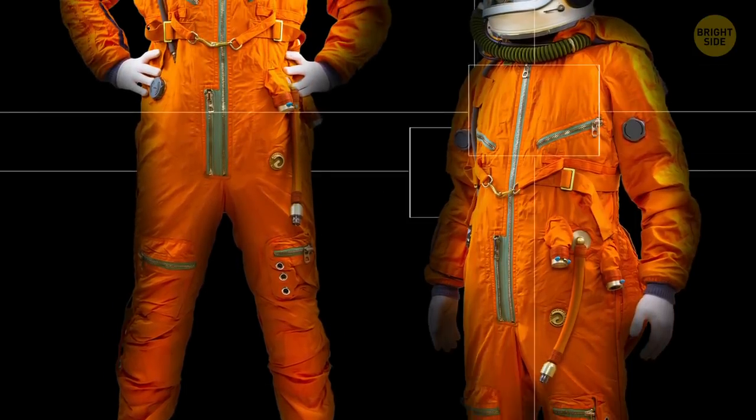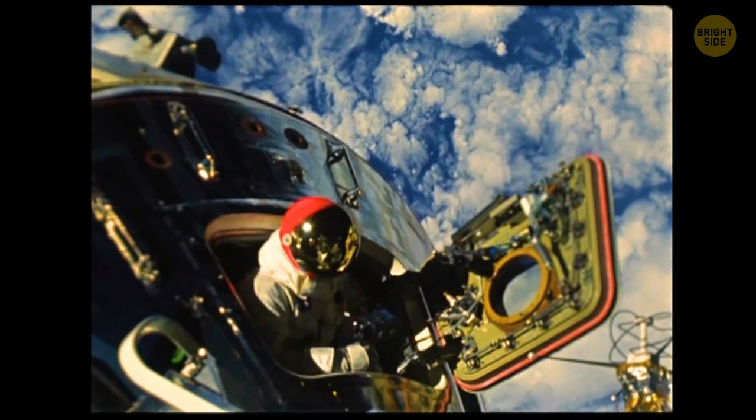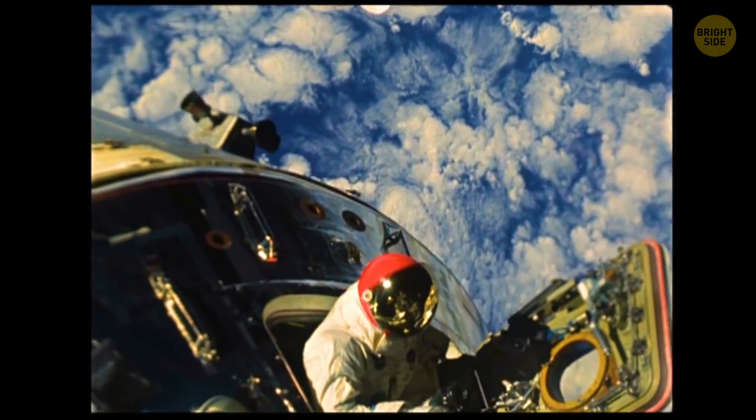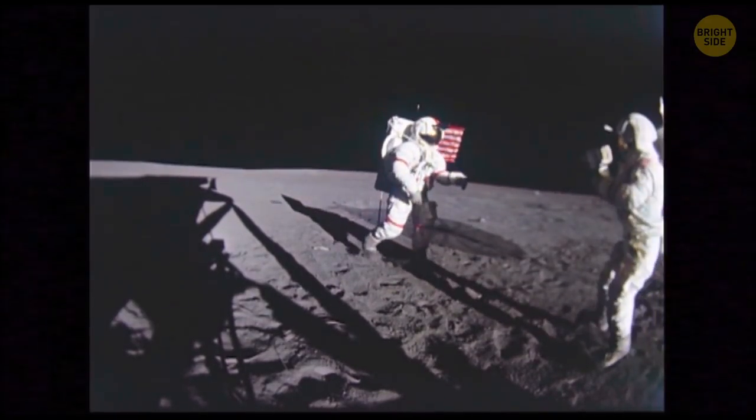Color me weightless. Astronauts only wear orange spacesuits during launch, landing, or when they're in the spaceship for survival and rescue purposes. Their white suits are equipped differently to help them survive in outer space.